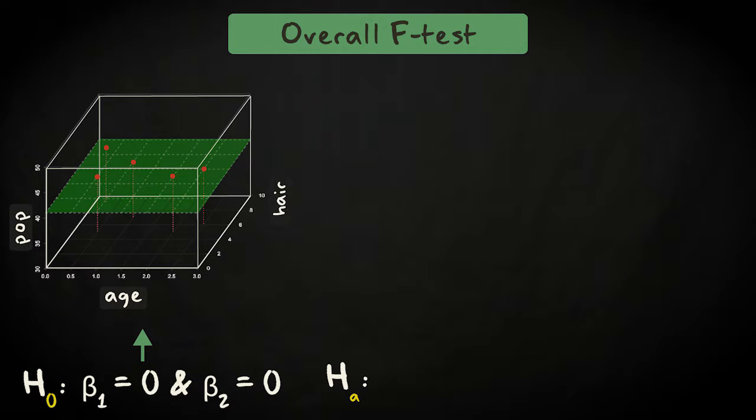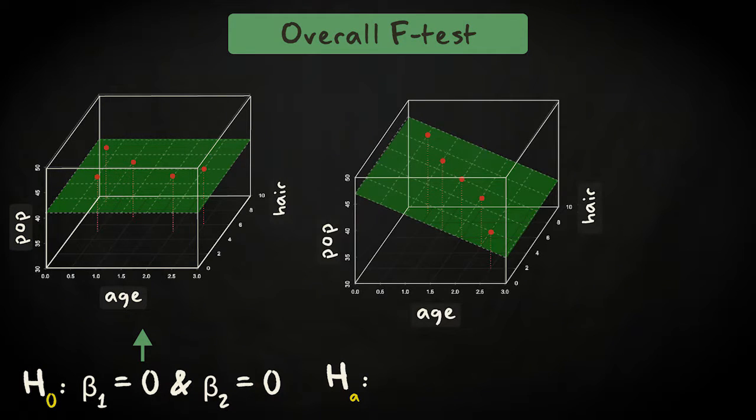The alternative hypothesis is that at least one of the predictors is related to the response variable. If cat age, hairiness, or both are related to video popularity, the plane will no longer be flat. In other words, at least one, several, or all of the regression coefficients will differ from zero.